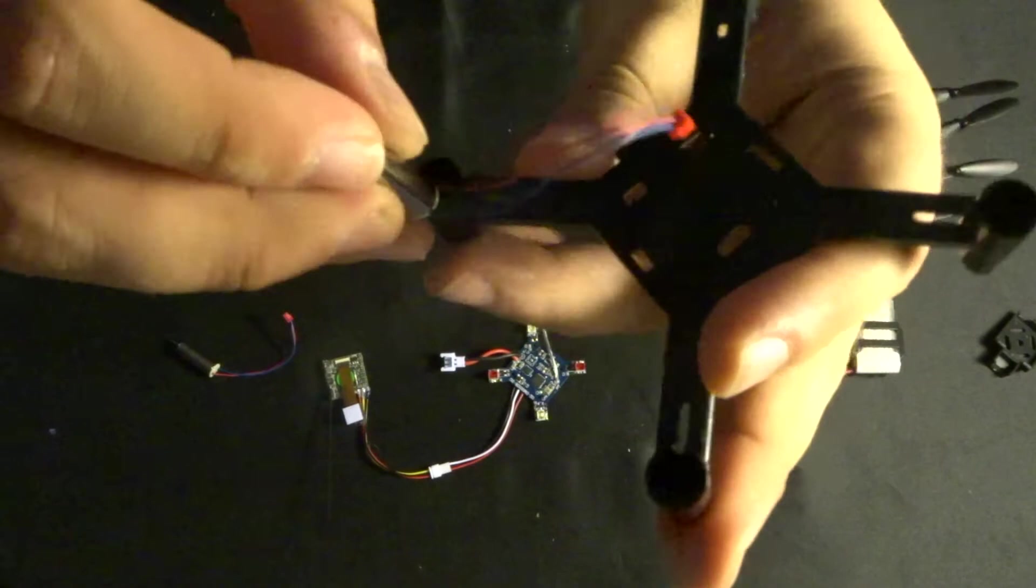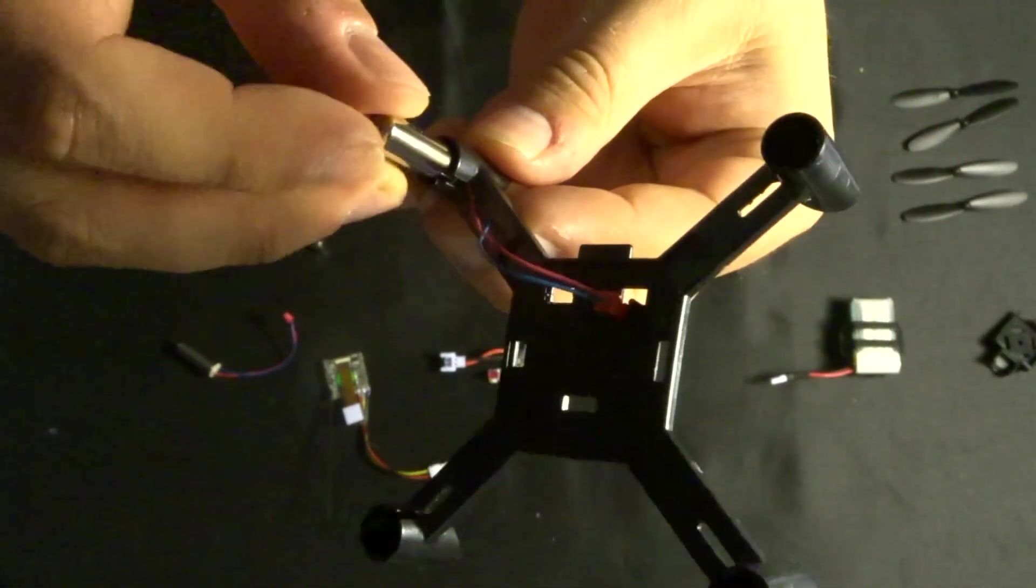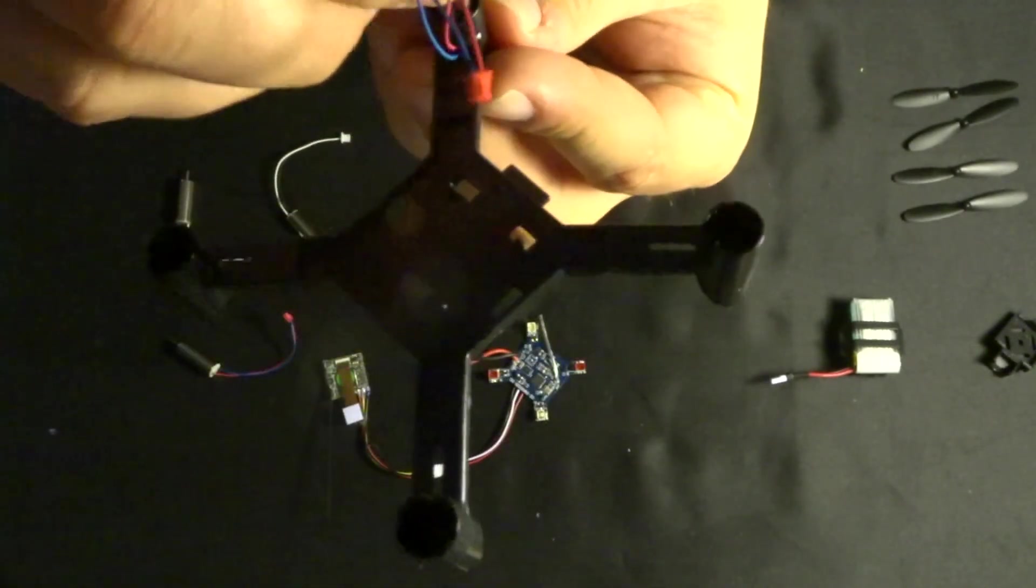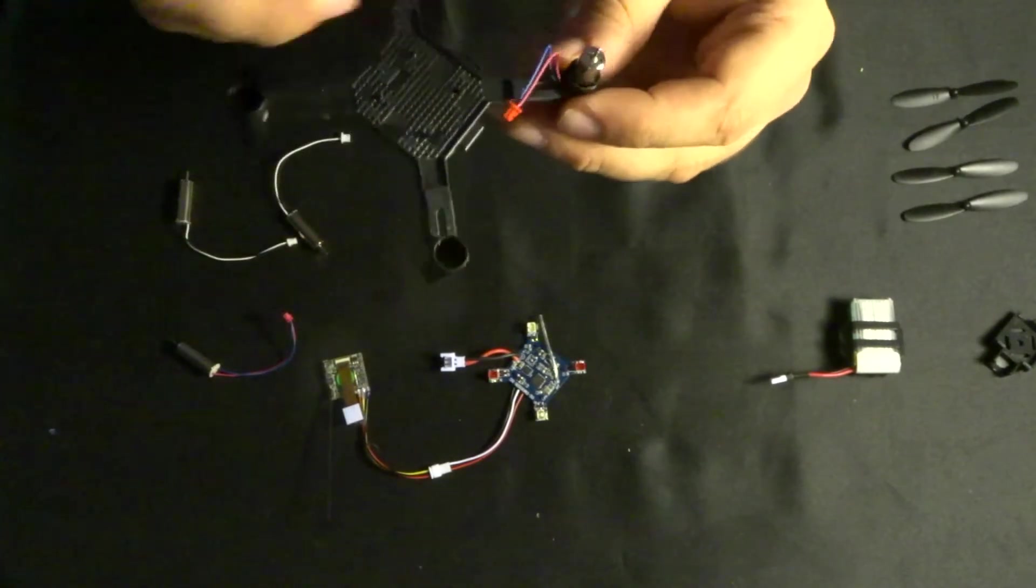So to fit it, all we're going to do is put the motor into the motor housing there and make sure that the cable is in line, and then we're just going to push it down. There we go, that's motor A fitted, perfect.